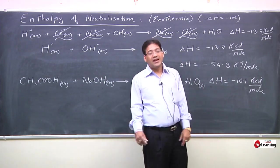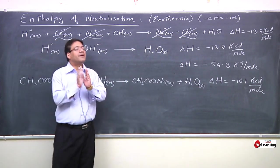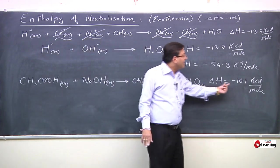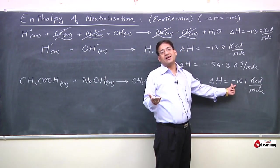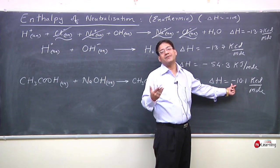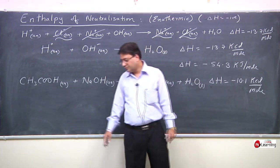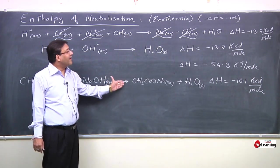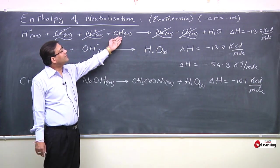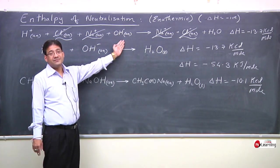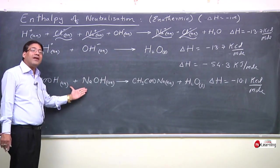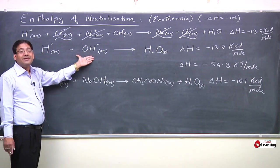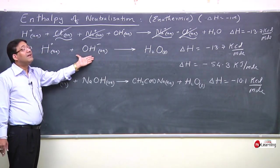Is this an exothermic or endothermic reaction? From the negative value of delta H we conclude it is exothermic — heat is liberated. But is this reaction more exothermic or less exothermic compared to the strong acid–strong base case? It is definitely less exothermic. Here 13.7 kcal of heat is liberated, while here only 10.1 kcal is liberated — so less heat is liberated, making this reaction less exothermic.